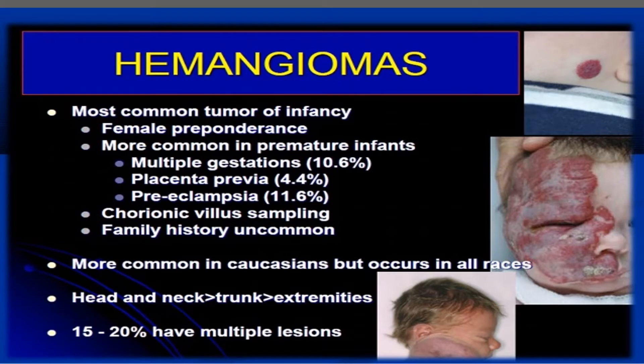Hemangioma is the most common tumor of infancy. It is slightly more common in females and more common in premature infants, those with multiple gestations, and when the mother has placenta previa or preeclampsia. Family histories are common. It is most common in Caucasians but occurs in all races. Head and neck location is more common than trunk and extremities, and 10 to 20 percent have multiple lesions.